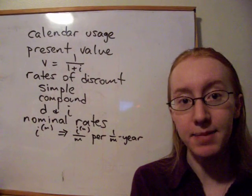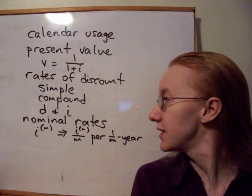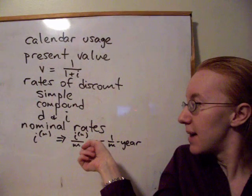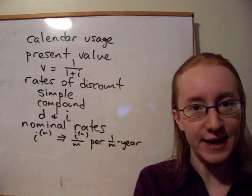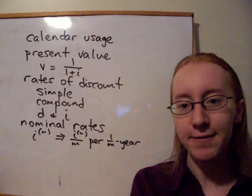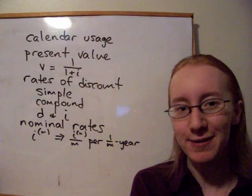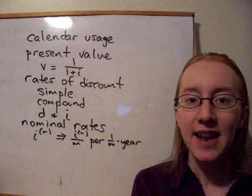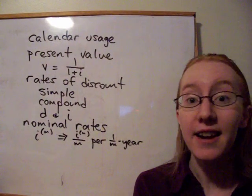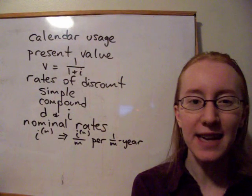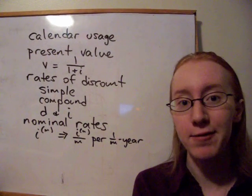And a nominal rate of I upper M per year is equivalent to I upper M divided by M per 1 over M of a year. So it gets compounded every 1 over M of a year, so every quarter or every month, etc. And of course, the effective rate of interest that's equivalent to that is going to be higher than the actual nominal rate because we're getting that compounding partway through the year.